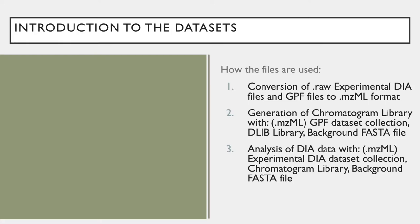The initial experimental DIA dataset collection and the GPF dataset collection will both be in a .raw format. These datasets are both made up of the same DIA data. However, while the experimental DIA dataset collection is made up of wide windows, the GPF dataset collection uses narrower windows for the pooled data with multiple acquisitions per precursor scan. The GPF dataset collection is then used in the generation of the chromatogram library that will be searched against in the analysis of the experimental dataset collection, providing the context of the specific DIA sample being analyzed.